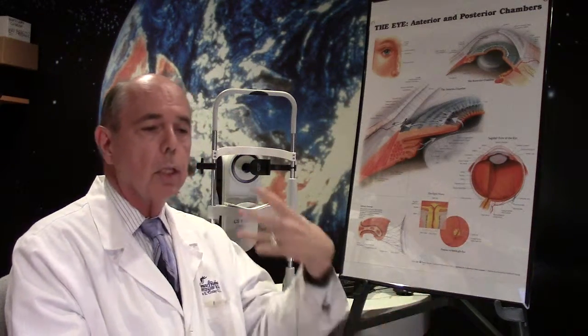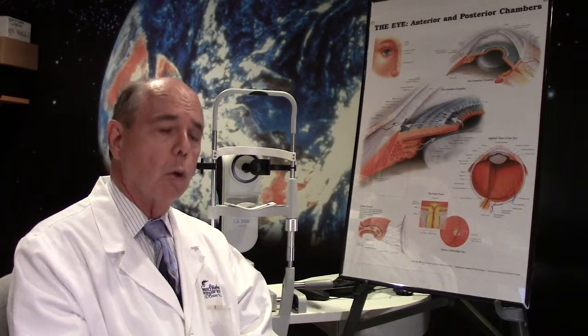This is no different than having a stroke where you have paralysis. This is a stroke to the eye and the plaque is called a Hollenhorst plaque.